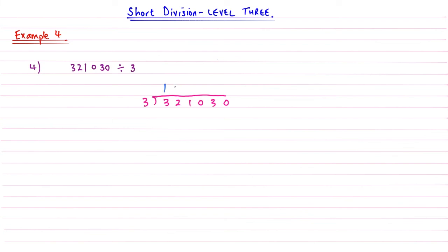Threes into two - well it's too big, so we have to put a zero on top and then carry the two. Threes into 21 - remember we're reading that as a 21 and not as a one - so that's going to be seven because three times seven is 21. Threes into zero, well nothing. That's short division level two again. Threes into three go one.